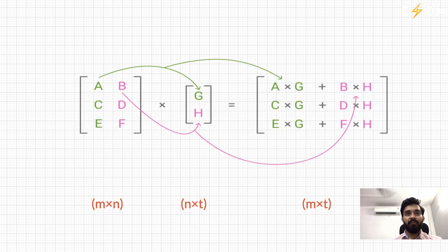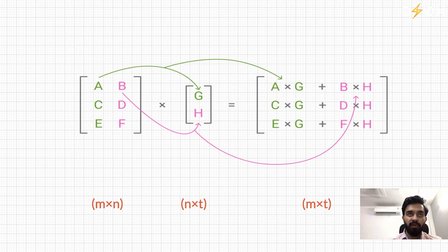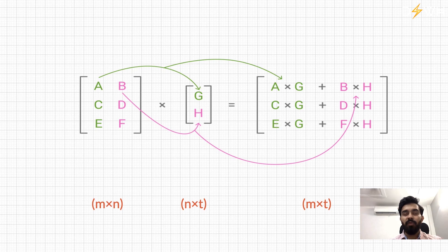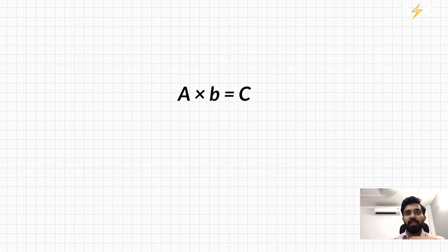To multiply two matrices, what you have to take care of is the dimension or the shape of your matrices. If the first matrix has shape M×N and the second has shape N×T, then the result of the product will have shape M×T. We have to make sure the number of columns in the first matrix equals the number of rows in the second matrix — N is common in both.